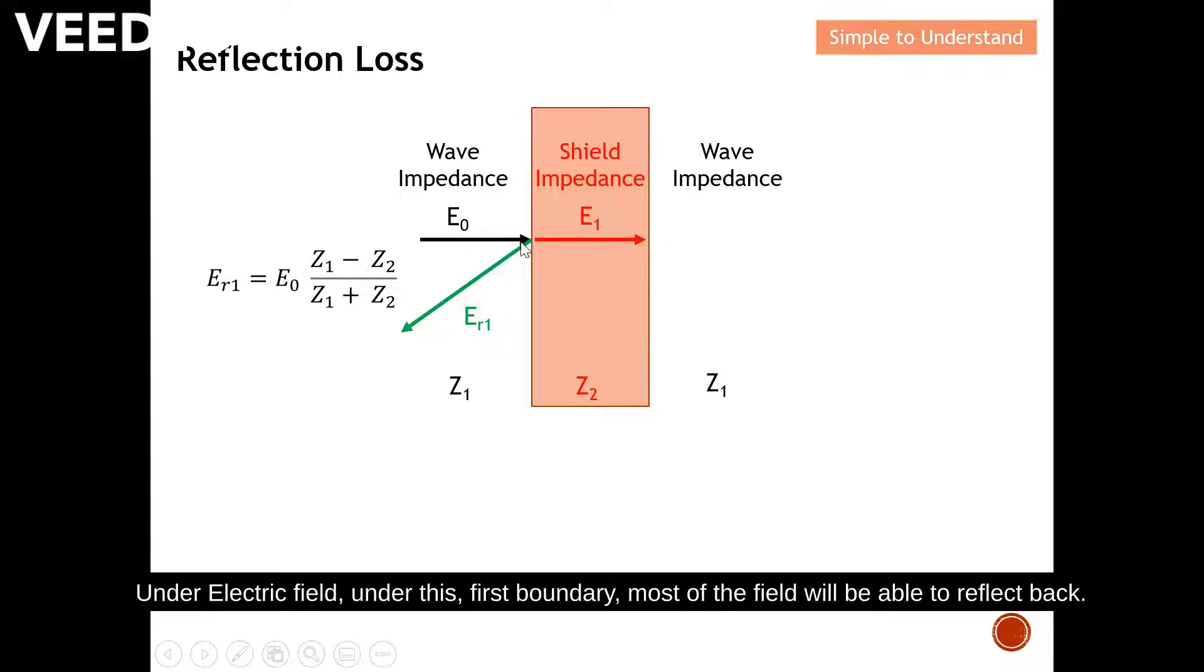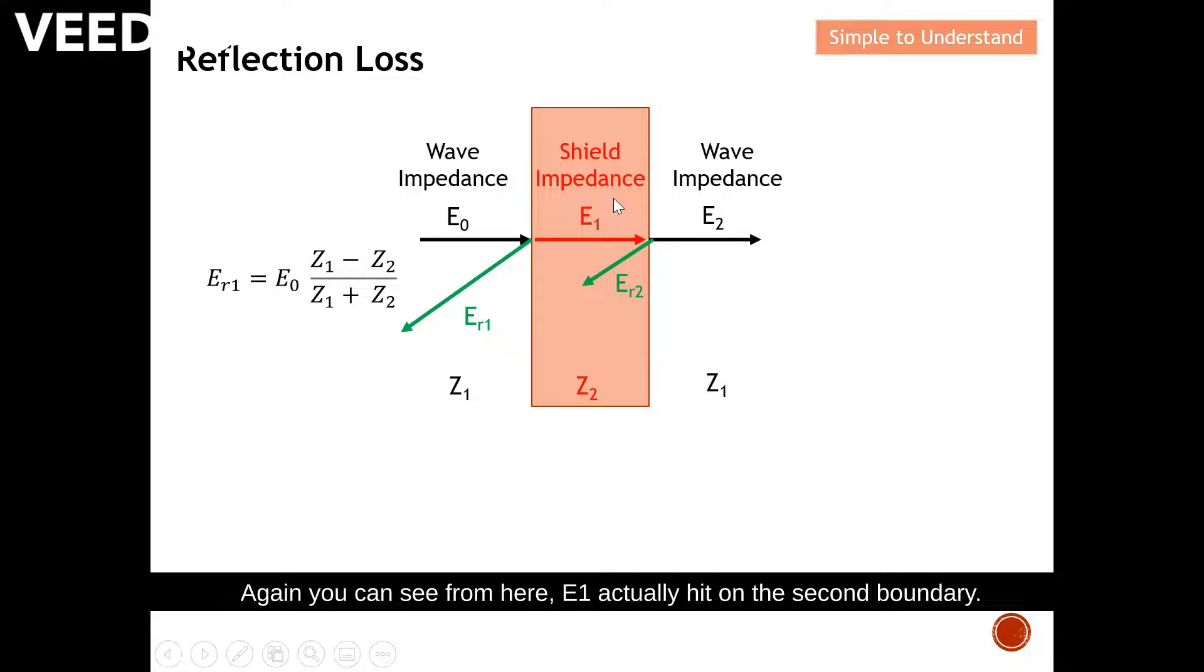Under electric field, under this first boundary, most of the field will be able to reflect back. This is the calculation of refracted wave with respect to the incident wave. Next, this is actually what we want to achieve. We want to know the amount of E2, which is the magnitude of the wave that successfully penetrates through the shield. E1 actually hits the second boundary. Some of them will be able to successfully penetrate through the second boundary, which I denote as E2. Because there is an impedance discontinuity, refraction actually occurs, which I denote as ER2. Our objective is to find what is E2.